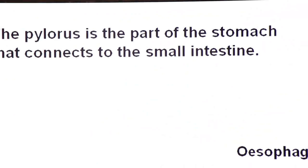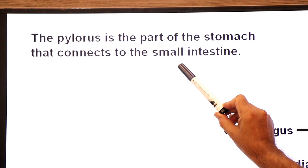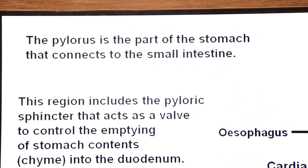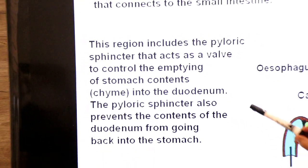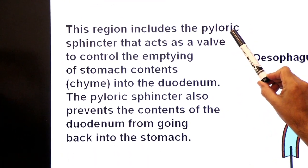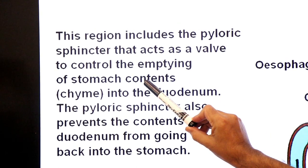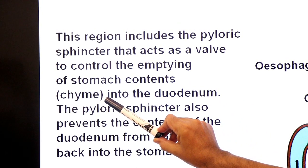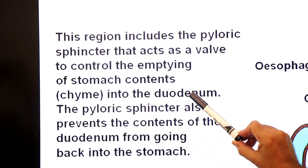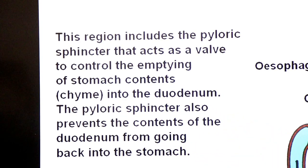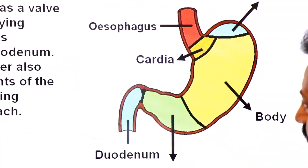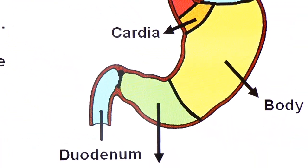The pylorus is the part of the stomach that connects to the small intestine. This region includes the pyloric sphincter, which acts as a valve to control the emptying of stomach contents. Chyme — the partially digested food of the stomach — empties into the duodenum. The pyloric sphincter also prevents the contents of the duodenum from going back into the stomach.